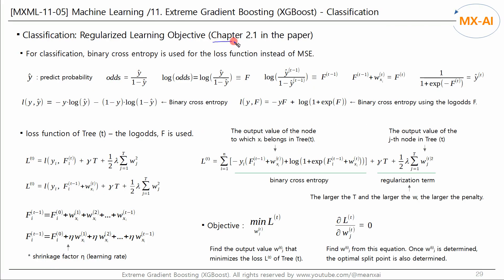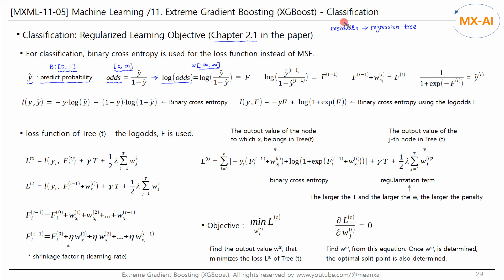Let's analyze the contents presented in chapter 2.1 of the paper one by one. Y-hat is the predicted probability, bounded to zero and one. Calculating the odds using y-hat gives us odds ranging from zero to positive infinity. Taking the log of both sides gives us the log of odds, which is unbounded from negative infinity to positive infinity. XGBoost classification uses regression trees to learn the residuals, and uses these trees to estimate the log odds and convert the log odds into probabilities.